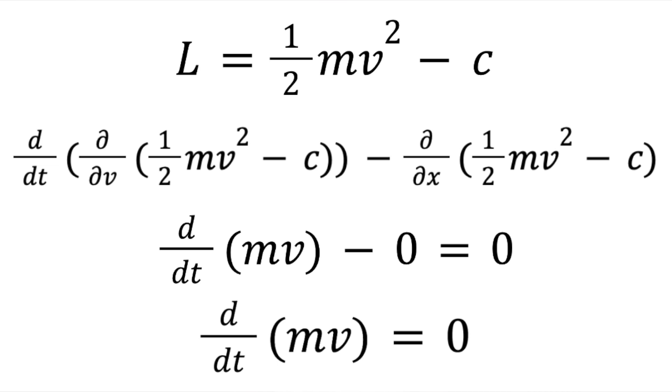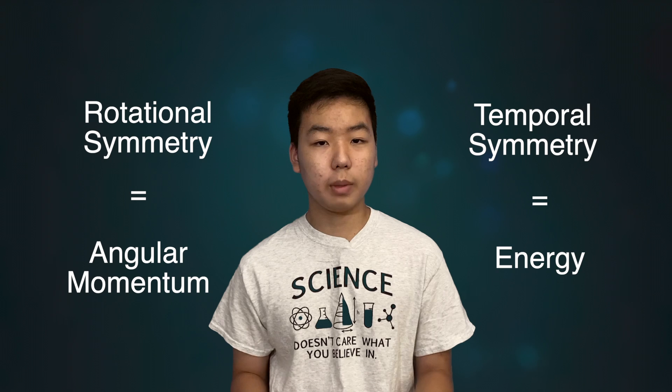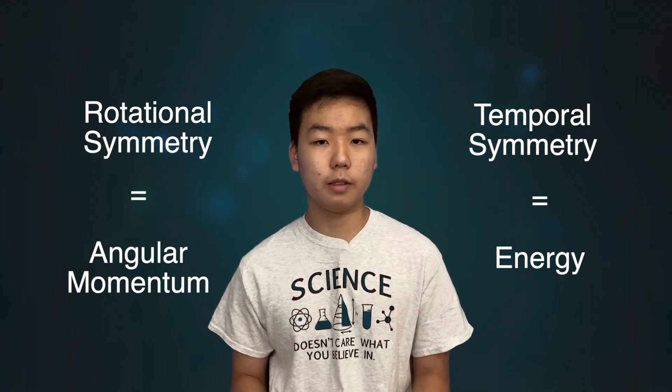The rate of change of momentum is zero, meaning that the momentum is constant, or in other words, conserved. So we see that our system with translational symmetry will conserve linear momentum. We can repeat a similar process for other types of continuous symmetries and derive their respective conservation laws. And that's one way Noether's theorem can be proved mathematically.